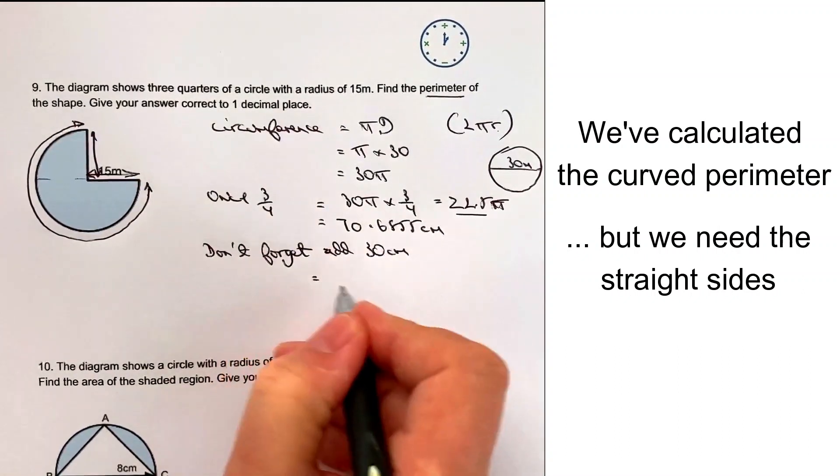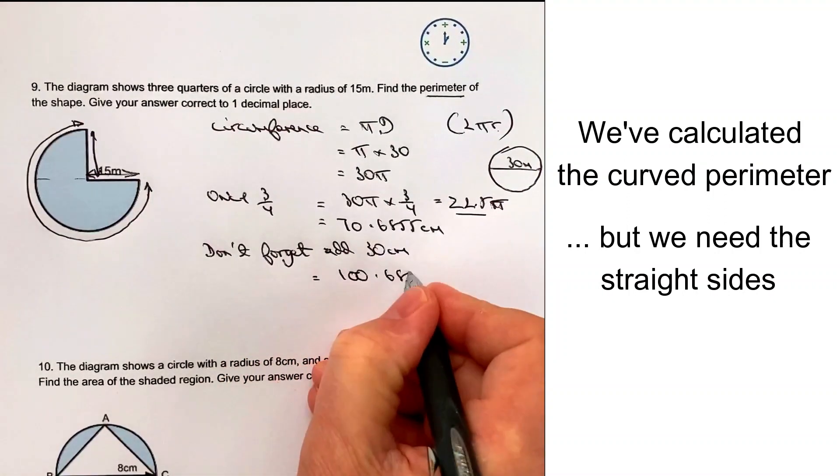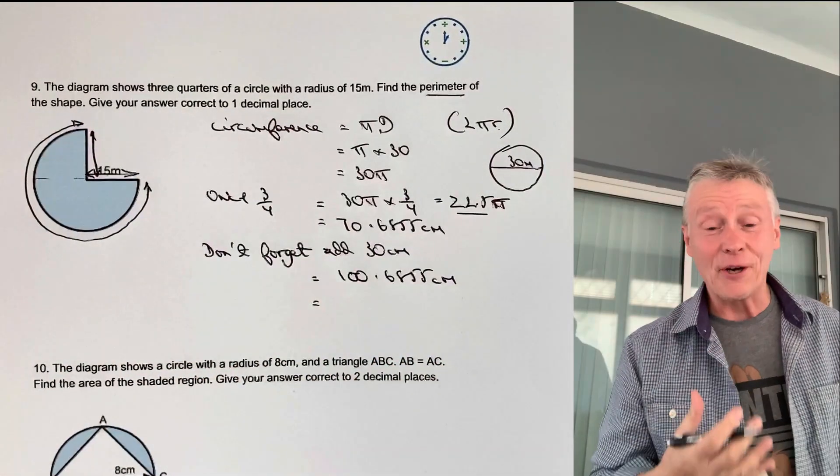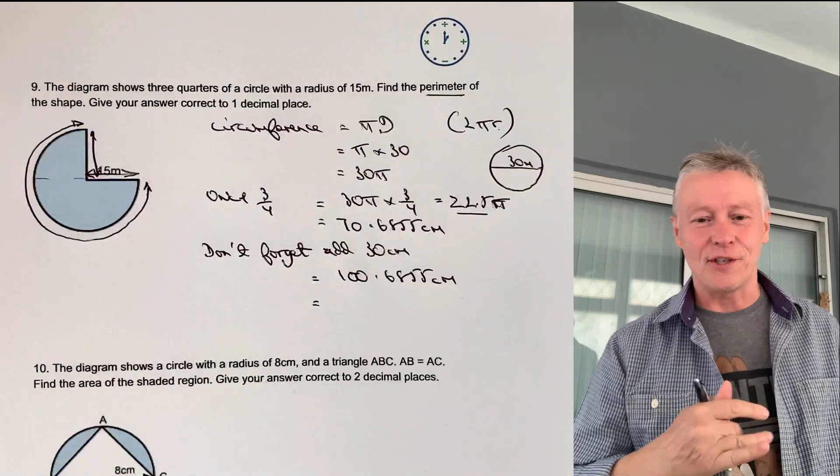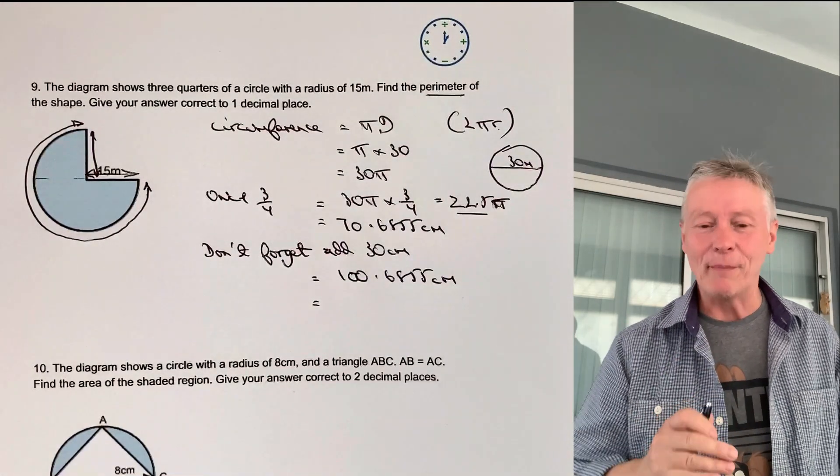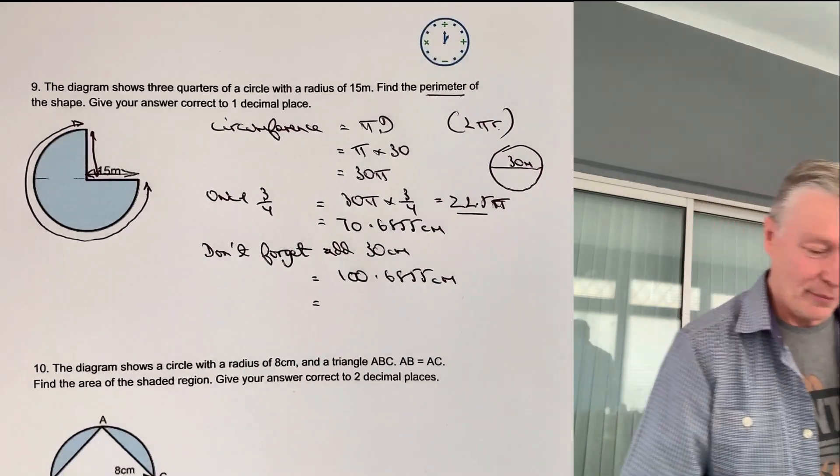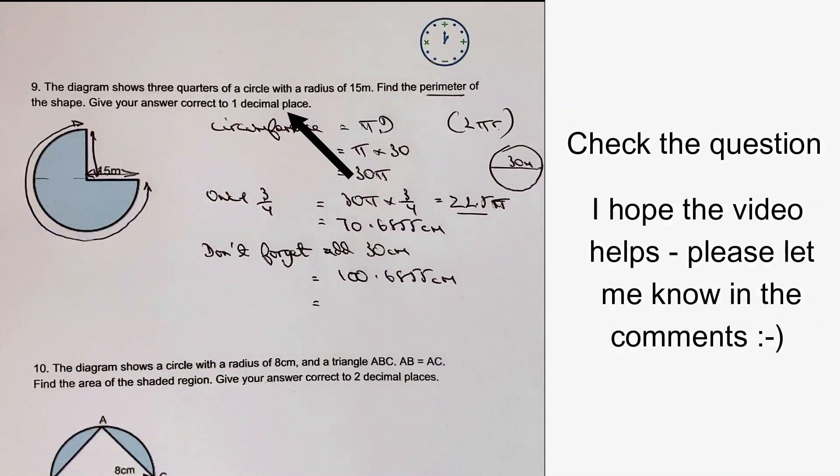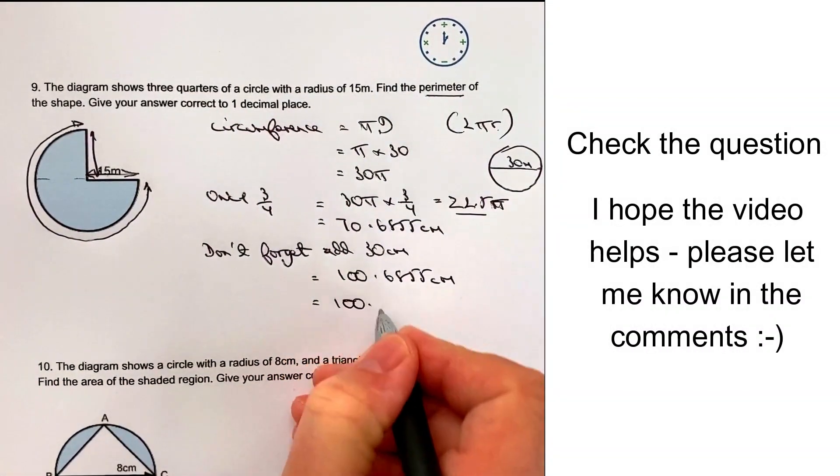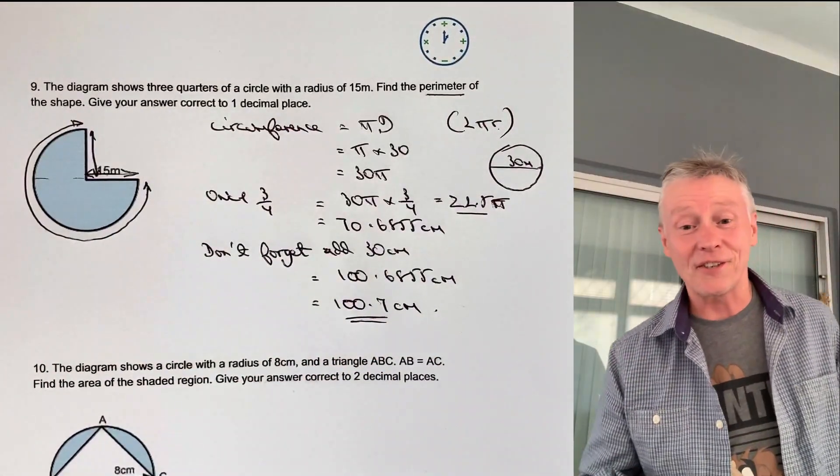So the total is going to be 100.6855 centimetres. And that's very common, actually. These types of questions are usually about three marks and those sorts of things do get left out. So always remember to add that extra little bit and then check with the question, because the question itself says it's one decimal place. So that's going to be 100.7 centimetres in total. That's the answer to that question.